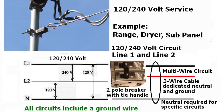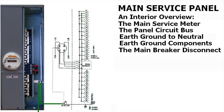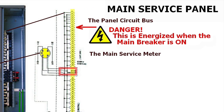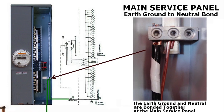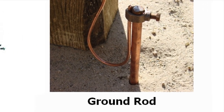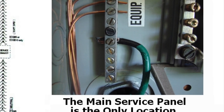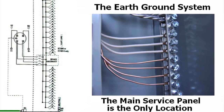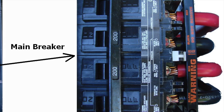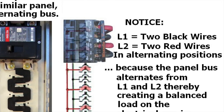We go deeper into the interior view, stressing again the danger aspects of electricity inside the panel, and show a representation of an average panel — what the circuit bus looks like inside and how the components fit together, especially the earth ground neutral bond system. We also show you the main circuit breaker, how it integrates into the panel bus, how it works, and what areas are energized and should be avoided.